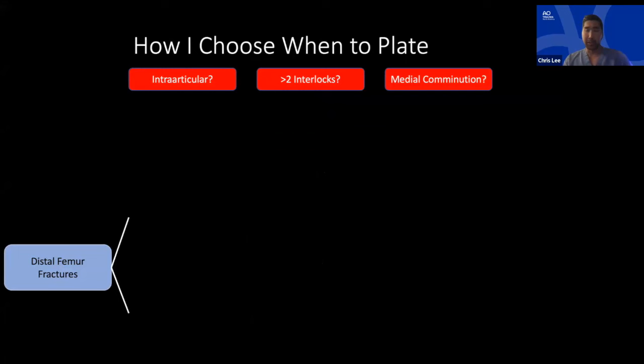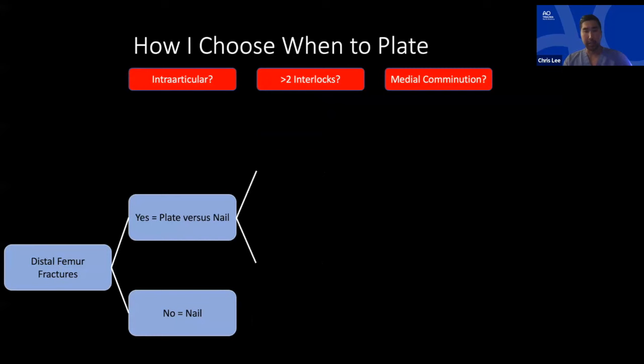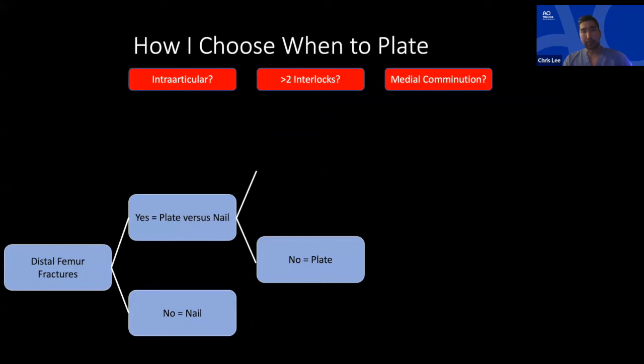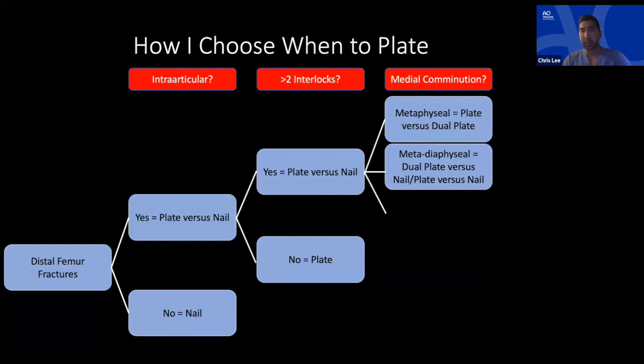How do I choose between single plate, nail-plate, or dual plate? For intra-articular fractures: if I can get two solid interlocking screws not in the fracture or comminution zone, I think about nail versus plate. If not, I just plate it. How much medial comminution and where? If purely metaphyseal — plate, nail, or dual plate are all options. If metadiaphyseal, I strongly consider dual plate versus nail-plate. If truly diaphyseal, a nail is best for medial column support.